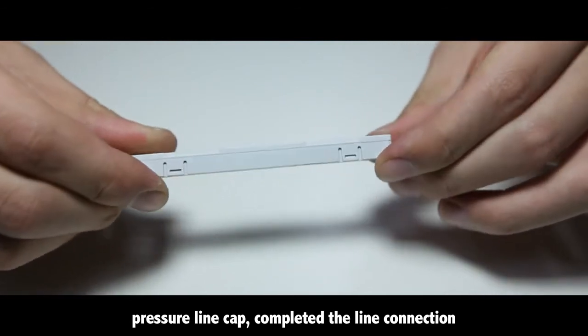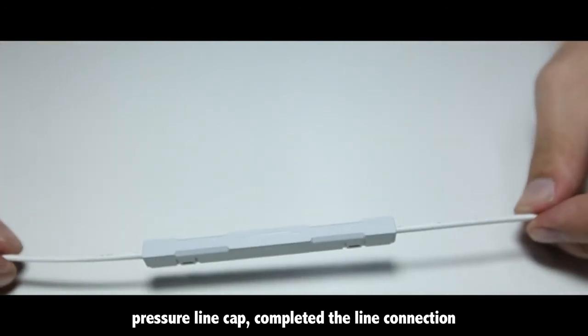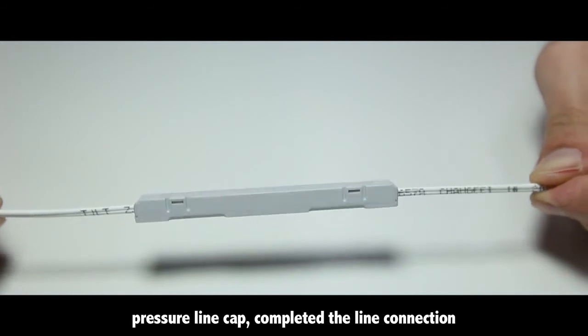Apply pressure under the cold catching cover to fix the optical fiber connection. Pressure the line cap. The line connection is now complete.